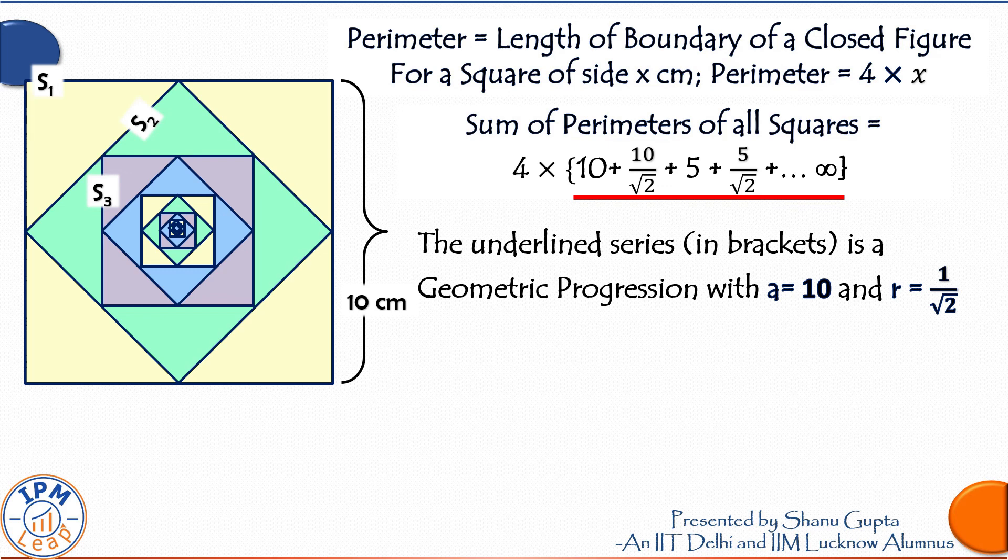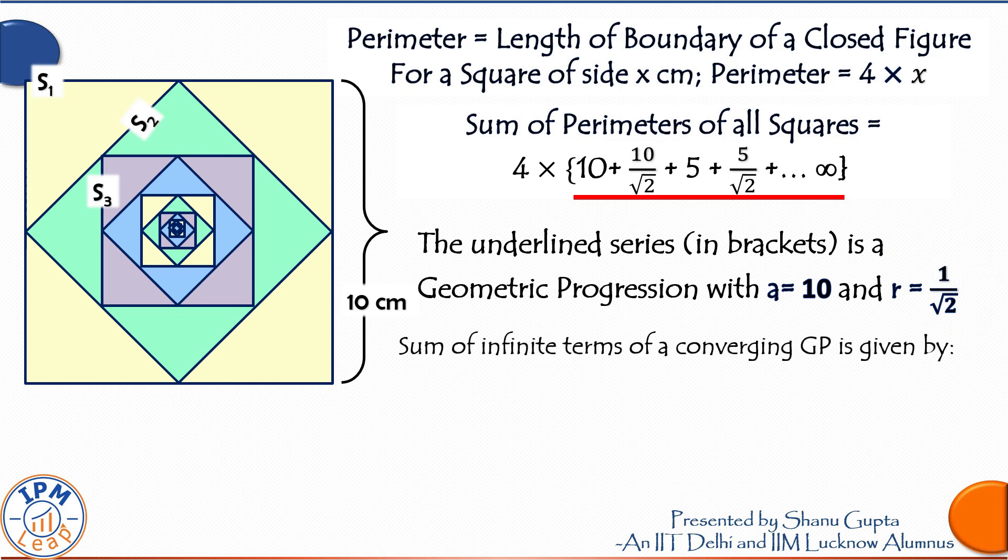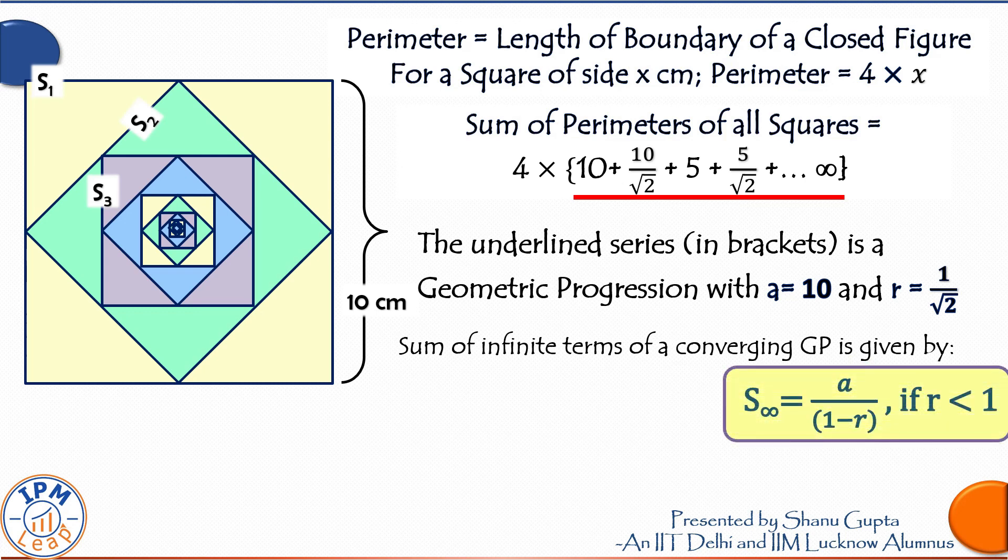In this GP, the first term a is equal to 10 and common ratio r is equal to 1 upon root 2. And since the common ratio is less than 1, it will be a converging GP. The sum of infinite terms of a converging GP is given by the formula a upon 1 minus r.